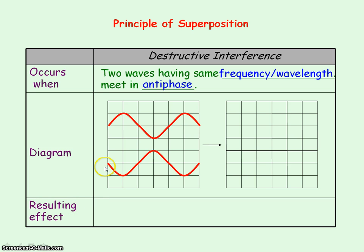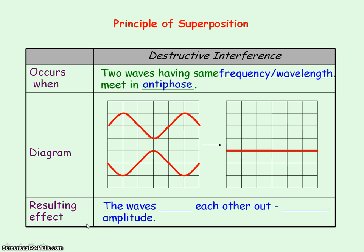If we apply the principle of superposition at each point along the wave, we see that at the first point we have zero displacement. At the next point, the top wave has a displacement of plus one but the bottom wave has a displacement of minus one, so the resultant will be zero. At the next point, the resultant is zero. At the next point, the bottom wave has a displacement of minus one but the top wave has a displacement of plus one, so again the resultant will be zero. At each subsequent point, they're both at zero displacement, giving zero resultant. So the waves have cancelled each other out — it's destructive interference.